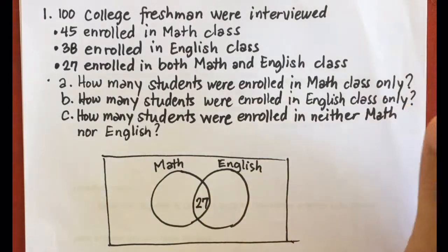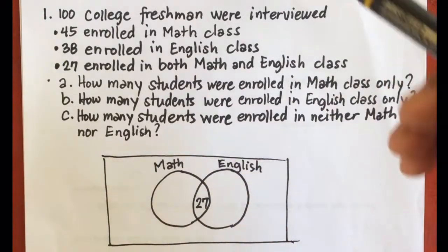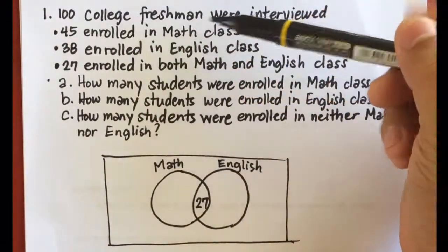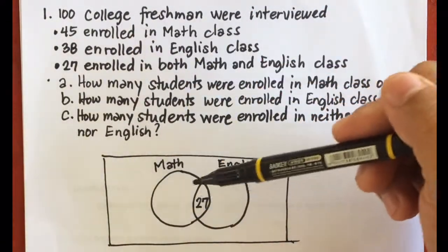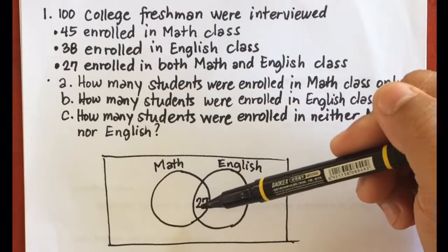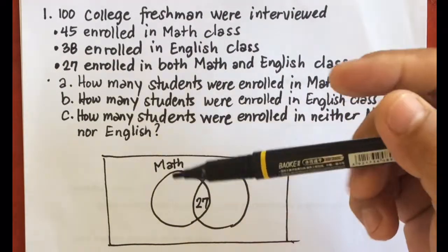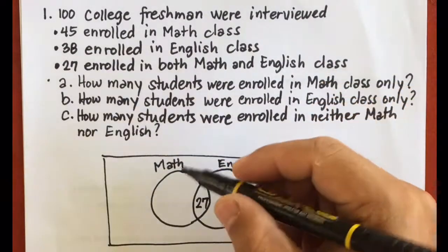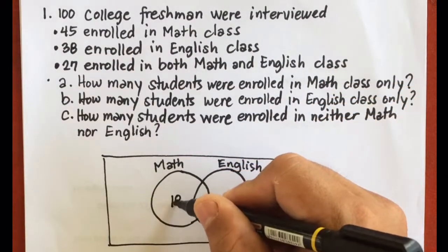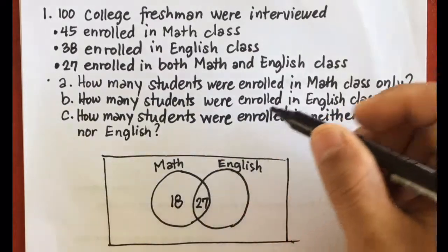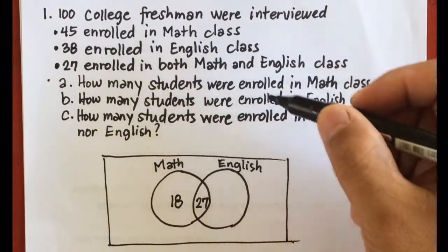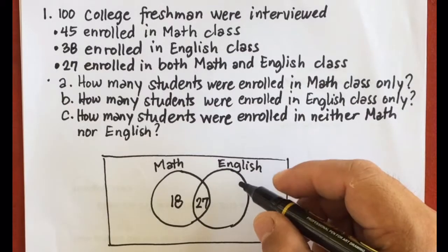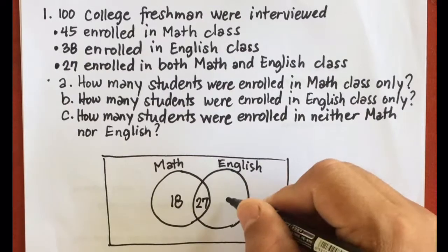To find the number of students enrolled in math only: 45 enrolled in math class total, so 45 minus 27 is 18. Then 38 were enrolled in English class, so 38 minus 27 is 11.